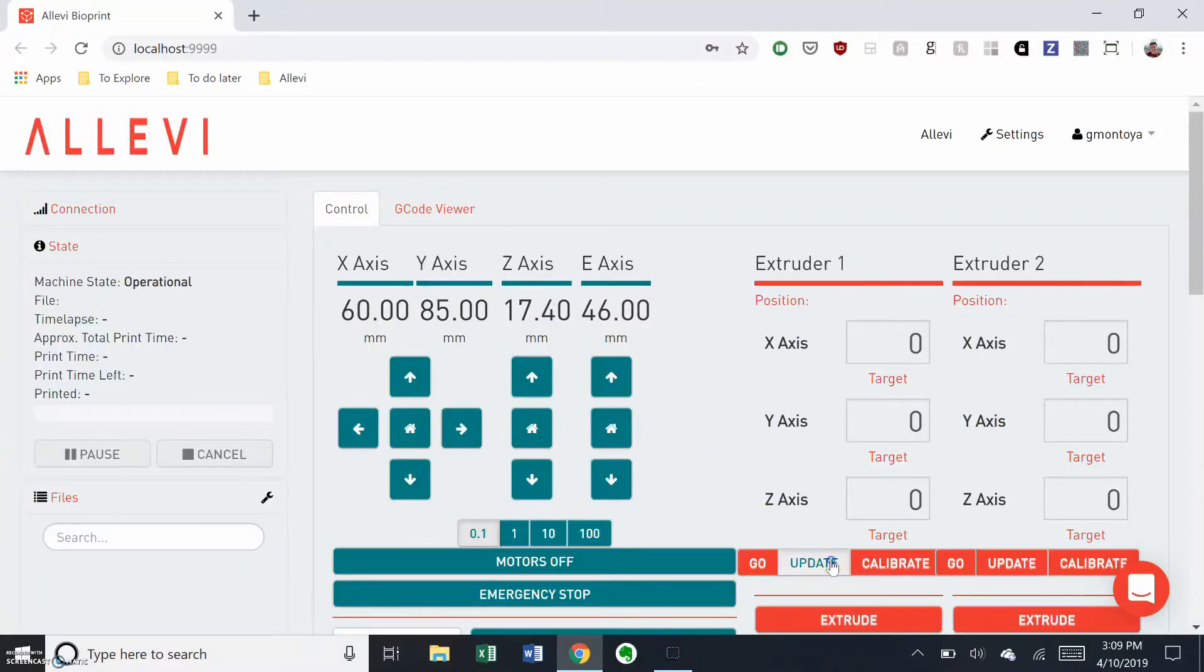Once you're at the right level, click update and make sure the values match. Then, click calibrate.